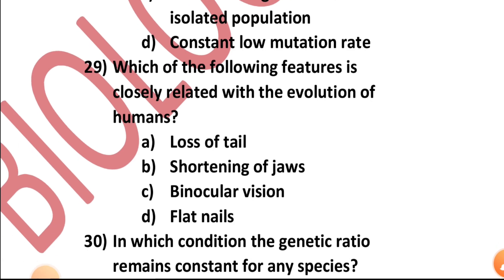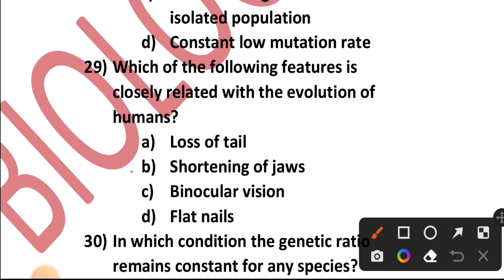Question number twenty-nine: Which one of the following features is closely related with the evolution of humans — loss of tails, shortening of jaws, binocular vision, or flat nails? It is shortening of jaws.